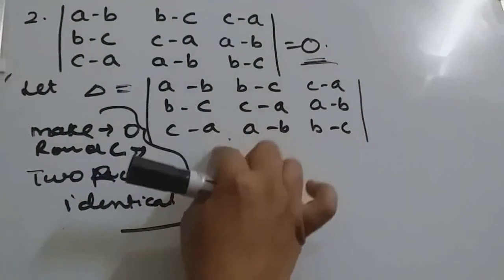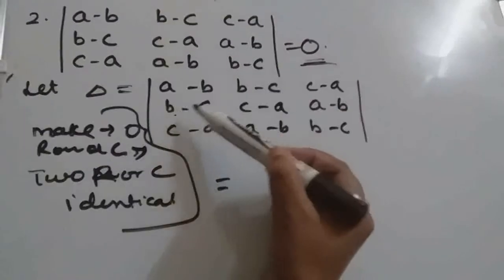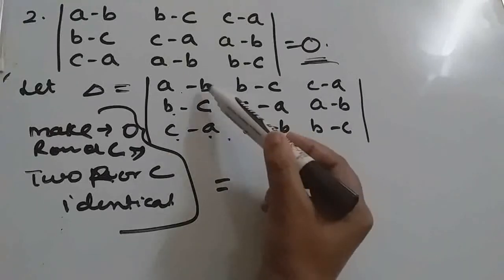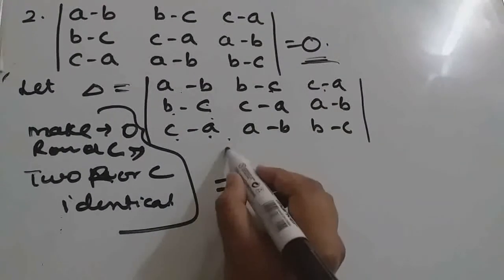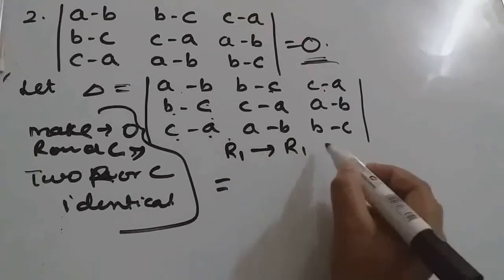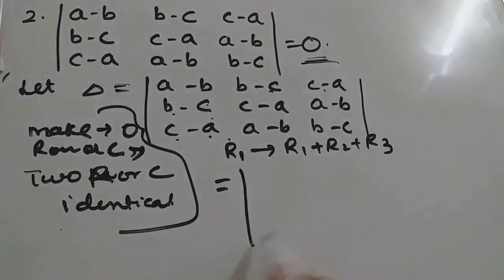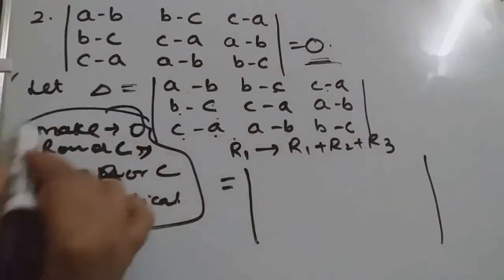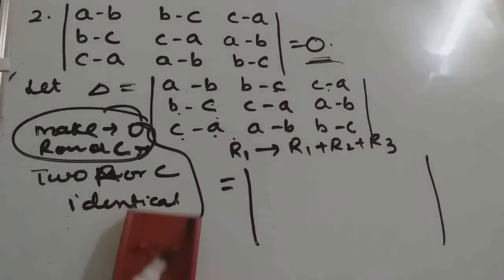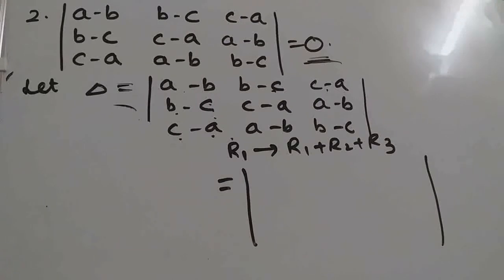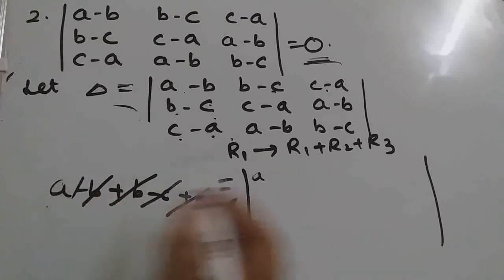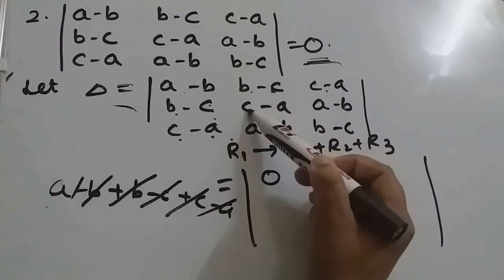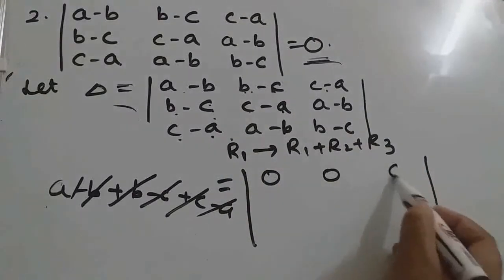Now observe the elements here. If you add a minus b plus b minus c plus c minus a, if you add all these three elements you will get 0. Here also, here also. So what we can do here? R1 we are changing and we are adding R1, R2, and R3. So which option we are using here? Making one row 0. So what we will get here? See, first row will be directly I am writing a minus b plus b minus c plus c minus a. So b minus b, c minus c, a minus a means 0 only. Here also, here also b minus b, a minus a is 0. Here also we will get 0.